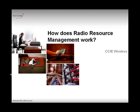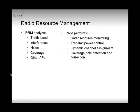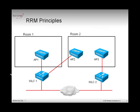In the previous video we checked how RRM was working. We determined that signals were sent from the access points, collected through other access points, and back to their controllers so that the controllers could know which access points were hearing each other, create groups of access points in the same RF space, and from there change the radio power level and channels of each access point.